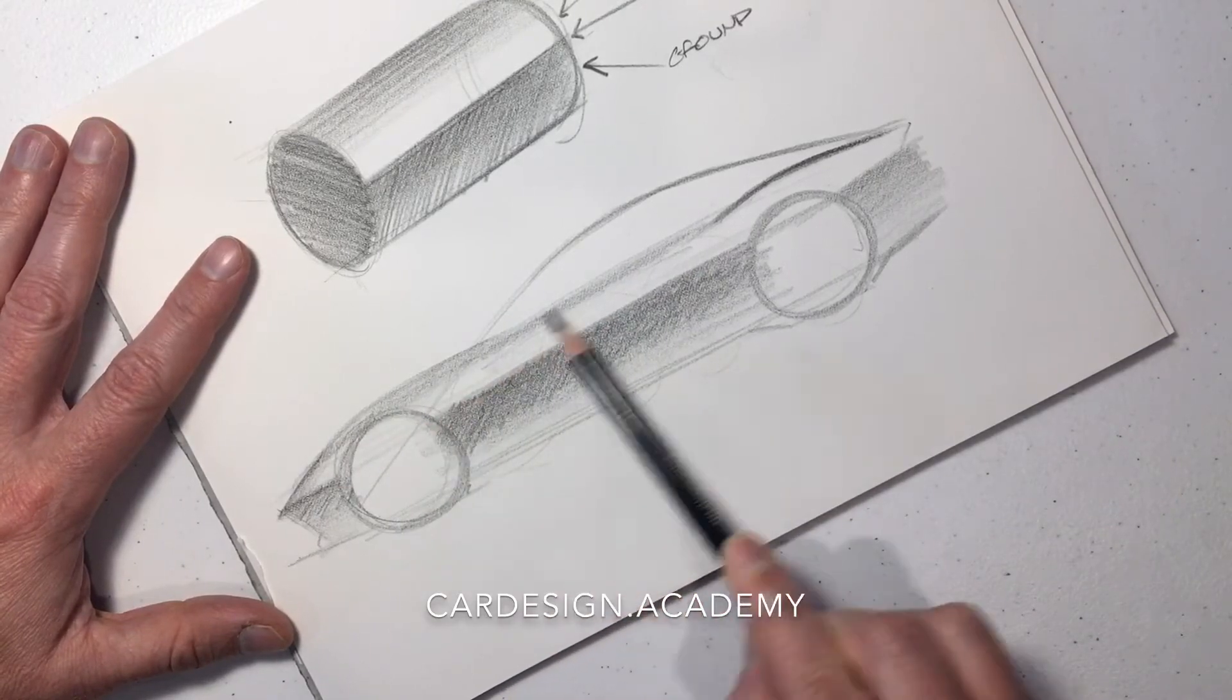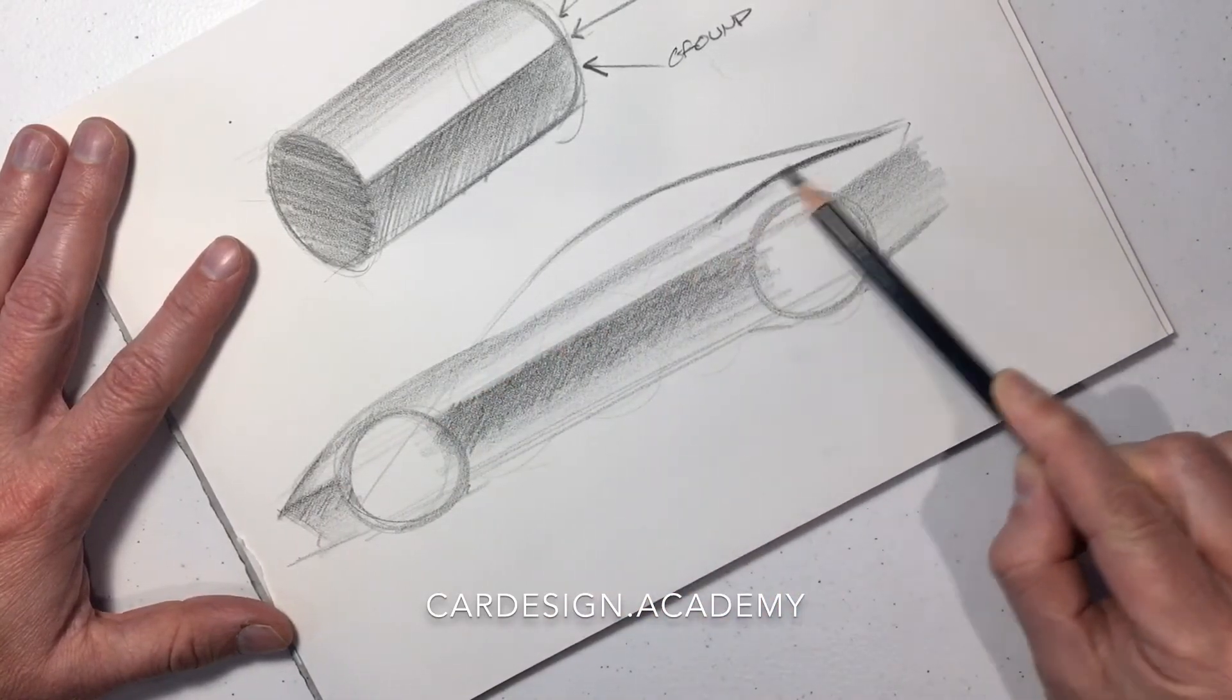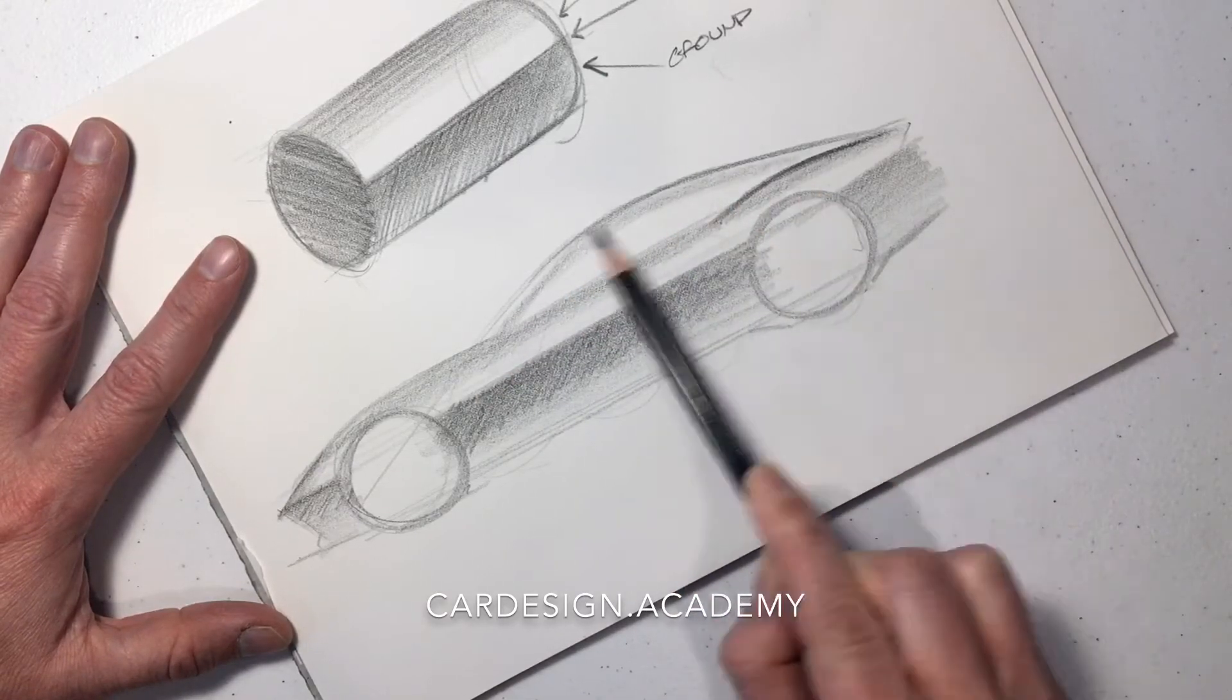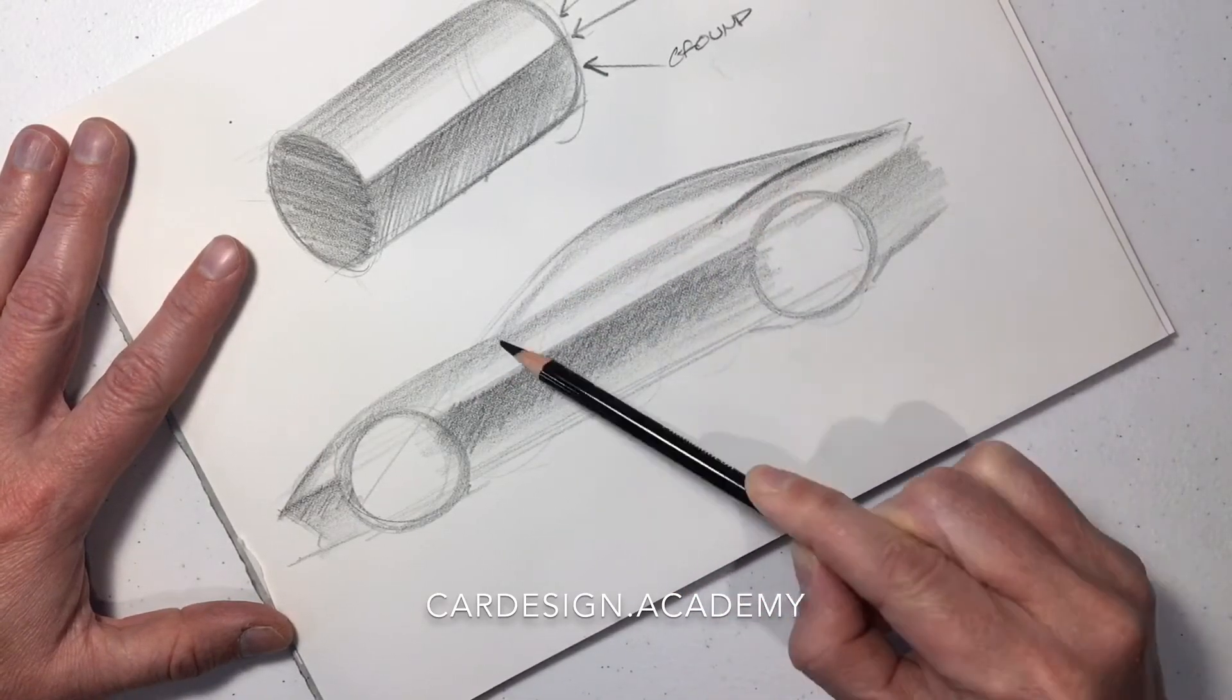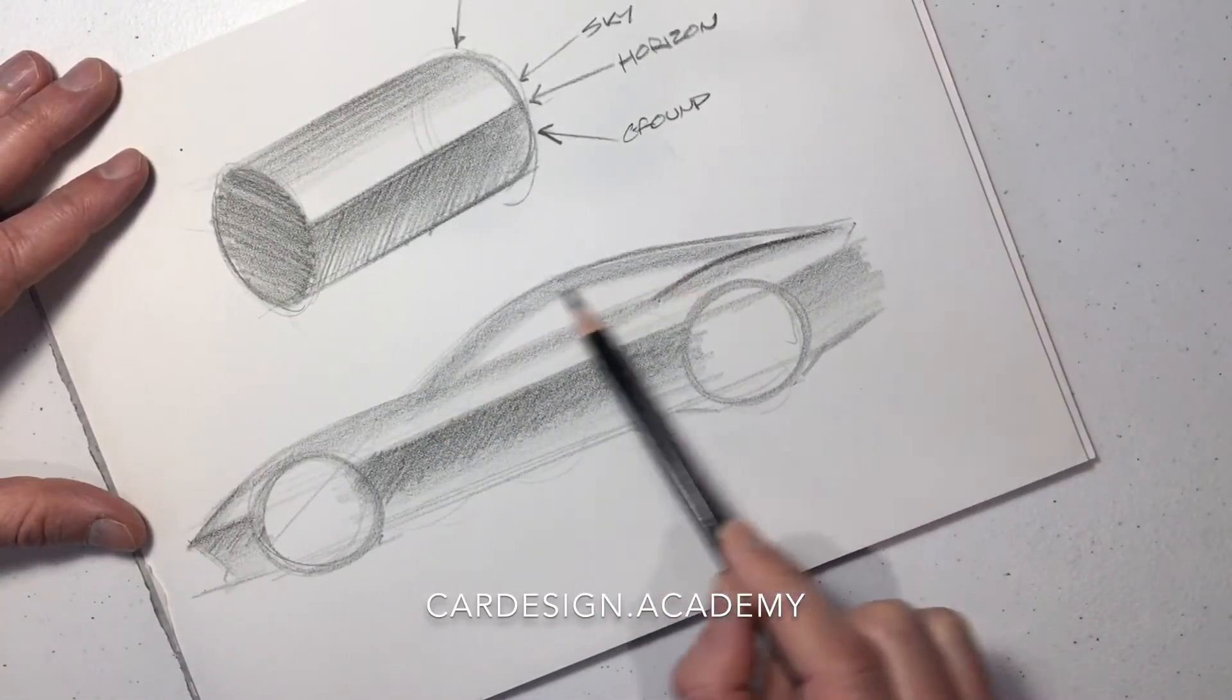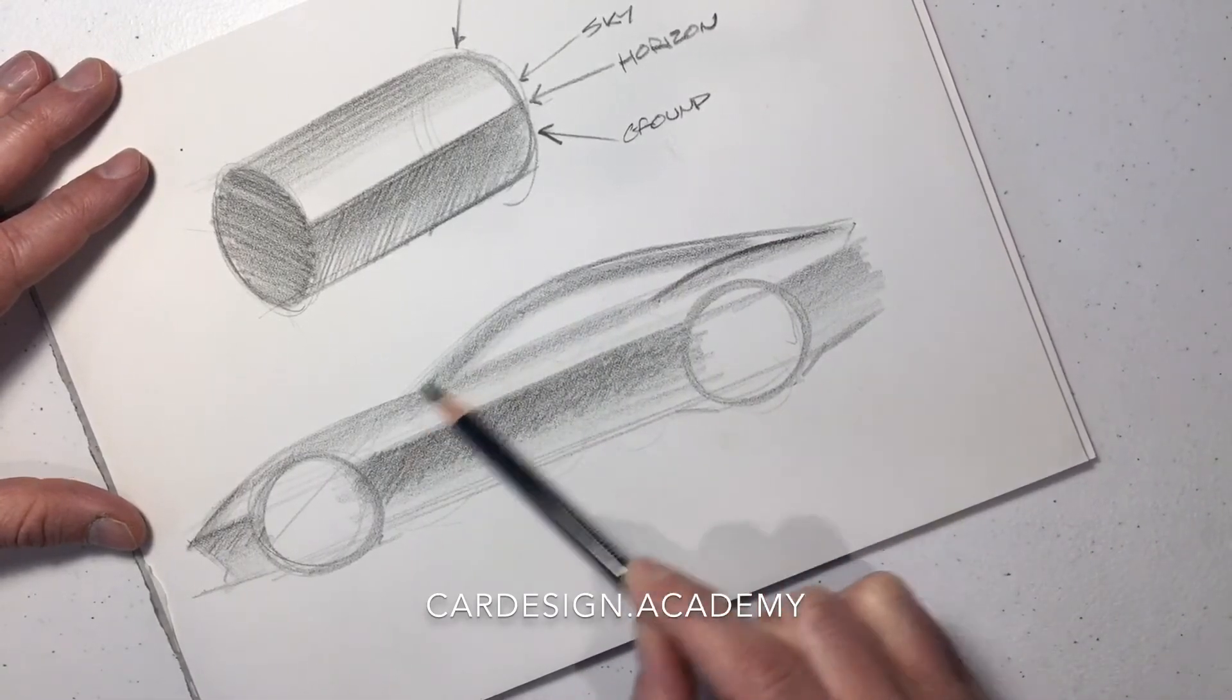Where the top of the door rolls over, just the same way as the top of the cylinder, you're going to start to see more of that deeper tone of the sky. The same thing goes for the cabin—it's a soft gradation.